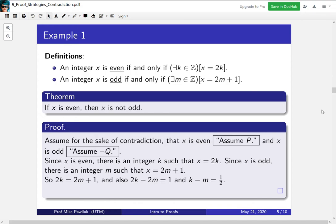Well, k and m are both integers, so their difference is still an integer. But 1/2 is not an integer. So we've just written something as both an integer and not an integer. That's our contradiction.